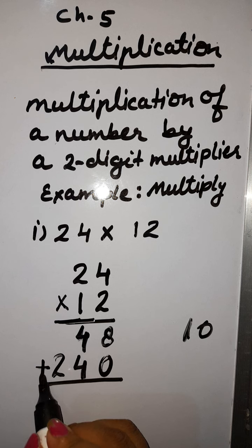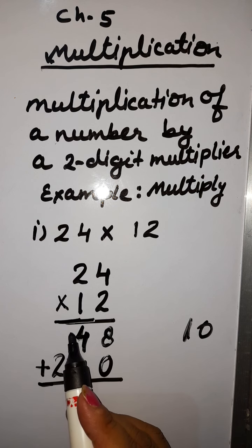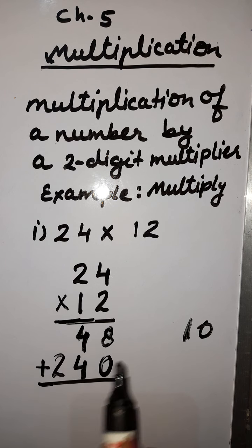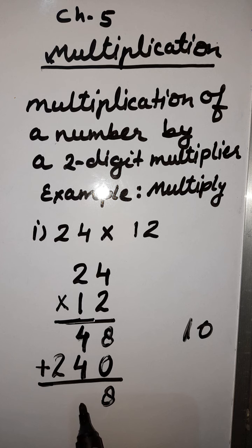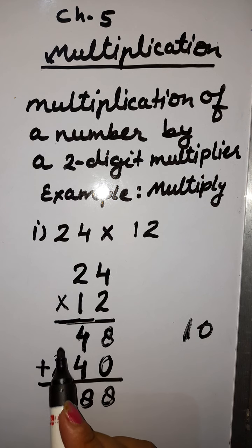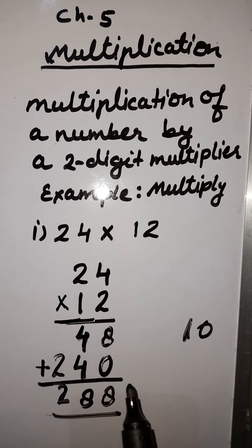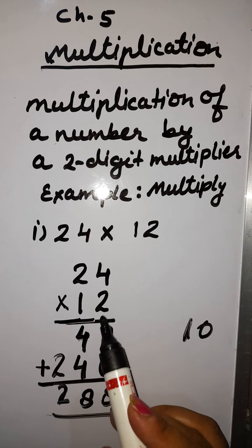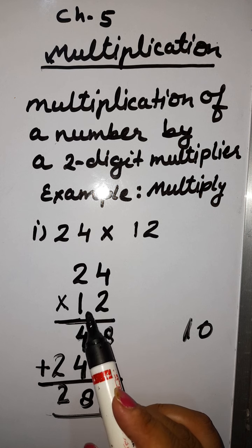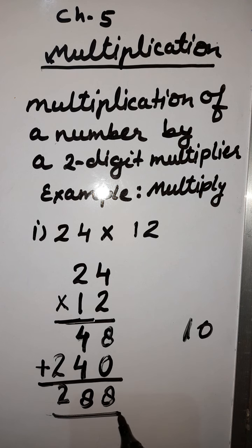Now add both the numbers, both the lines. We will add the upper line and the lower line. 8 plus 0 is 8. 4 plus 4 is 8. 2, no digits are here, so 2 will remain. Now the product of these two digits: 24 multiplied by 12 is equal to 288. Understood?